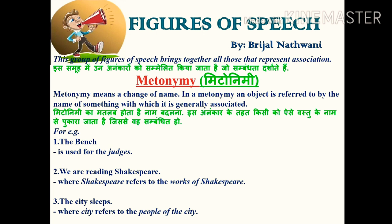This group of figures of speech brings together all those that represent association. Metonymy means a change of name — an object is referred to by the name of something with which it is generally associated. For example: 'the bench' is used for the judges; 'We are reading Shakespeare,' where Shakespeare refers to the works of Shakespeare; and 'The city sleeps,' where city refers to the people of the city. In this way, metonymy refers to objects by the name of something associated with them.